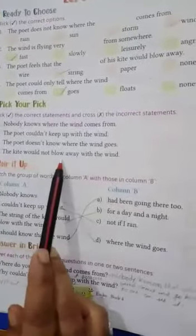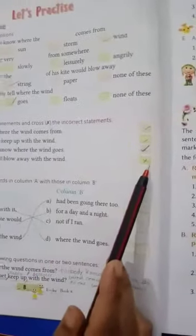Question number 4. The kite would not blow away with the wind. Is wrong. Now, see the matching word.